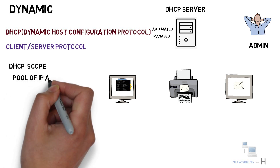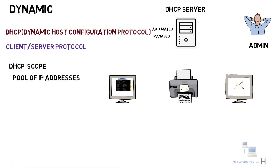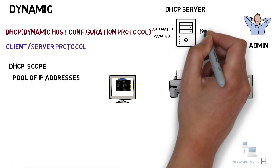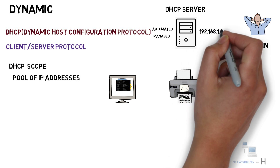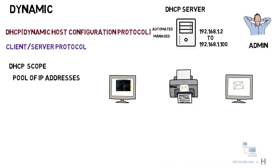Next we have DHCP scope. It is a pool of IP addresses, usually a range of consecutive numbers within a single IP subnet, maintained by a DHCP server. The DHCP server assigns IP addresses to clients from this pool or scope. Any numbers that the administrator does not want handed out can be excluded from the pool.